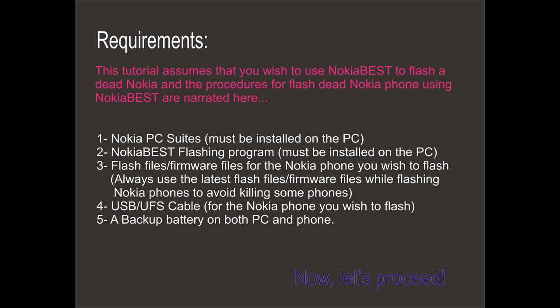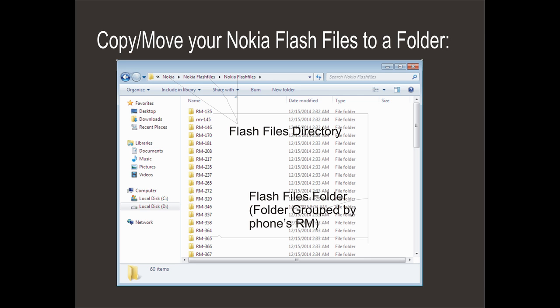Now let's proceed. First, copy or move all your Nokia phone flash files into a folder. Flash files for each phone are to be contained in a folder, and each folder should be named according to the ARAM number of the Nokia phone. For example, the flash files for Nokia 2700 should be contained in a folder named ARAM 561, because the ARAM number for Nokia 2700 is 561.